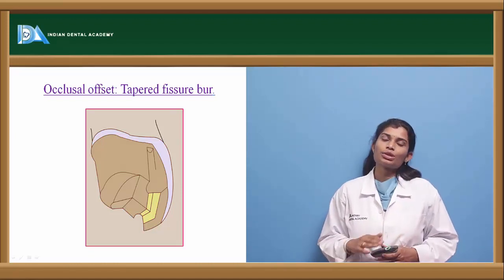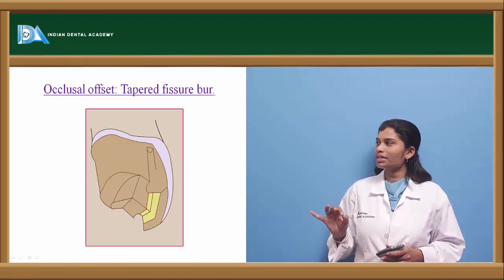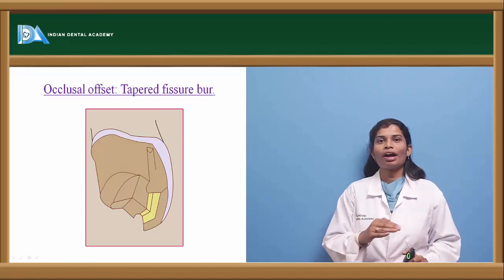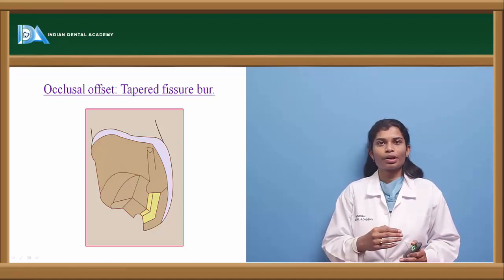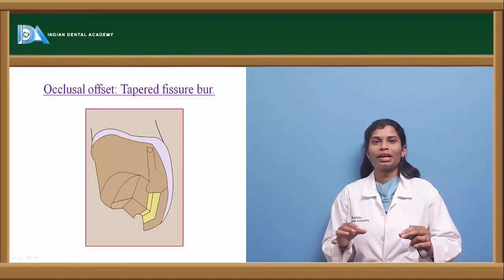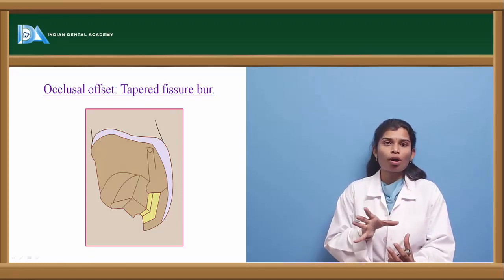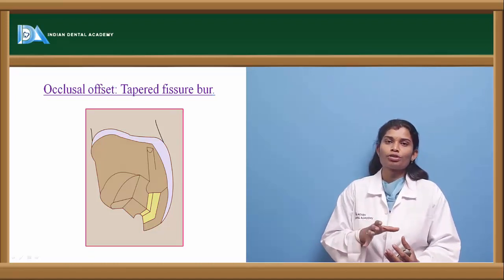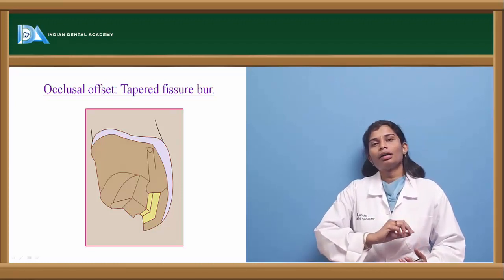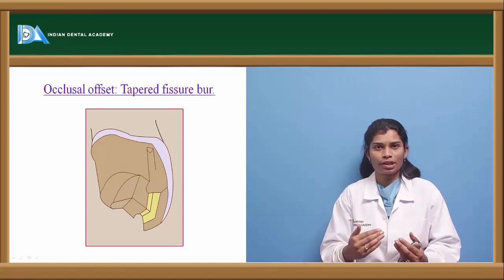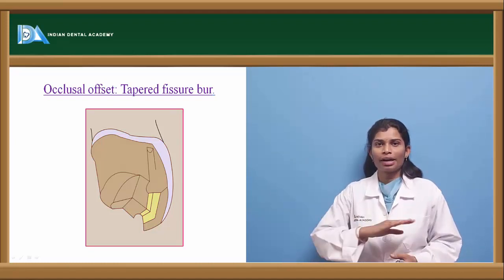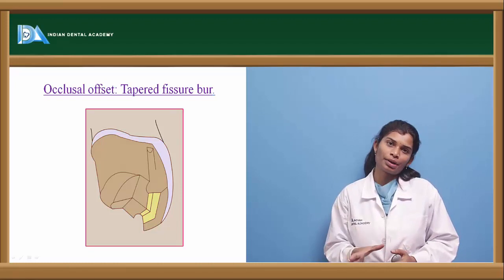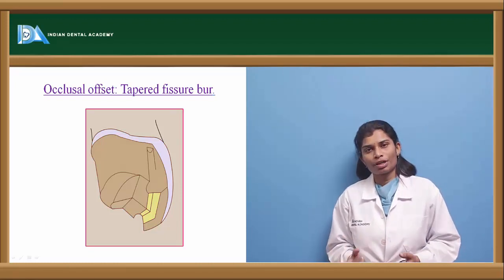The occlusal offset is a retentive feature placed with a tapered fissure bur. After reduction, at the area where the restoration ends, prepare a step using the tapered fissure bur. This creates additional reduction and acts as a stop, limiting the restoration as facially as possible. After the occlusal offset, a thin sharp margin develops facially — use a flame bur to finish it off, rounding it to form a good bevel that helps proper adaptation and burnishing of metal.